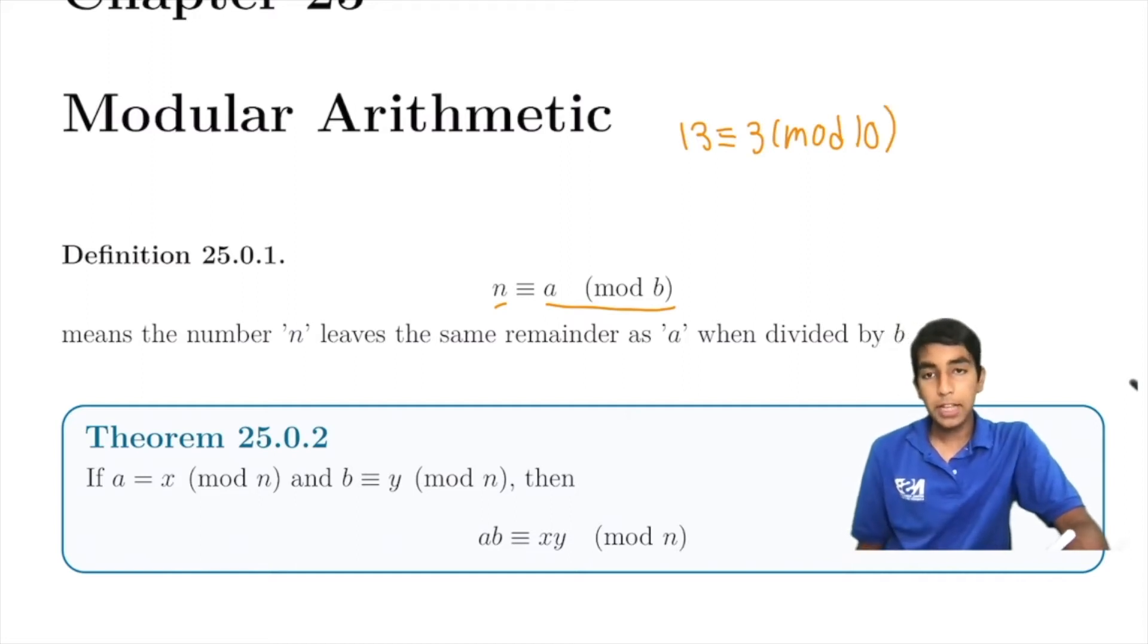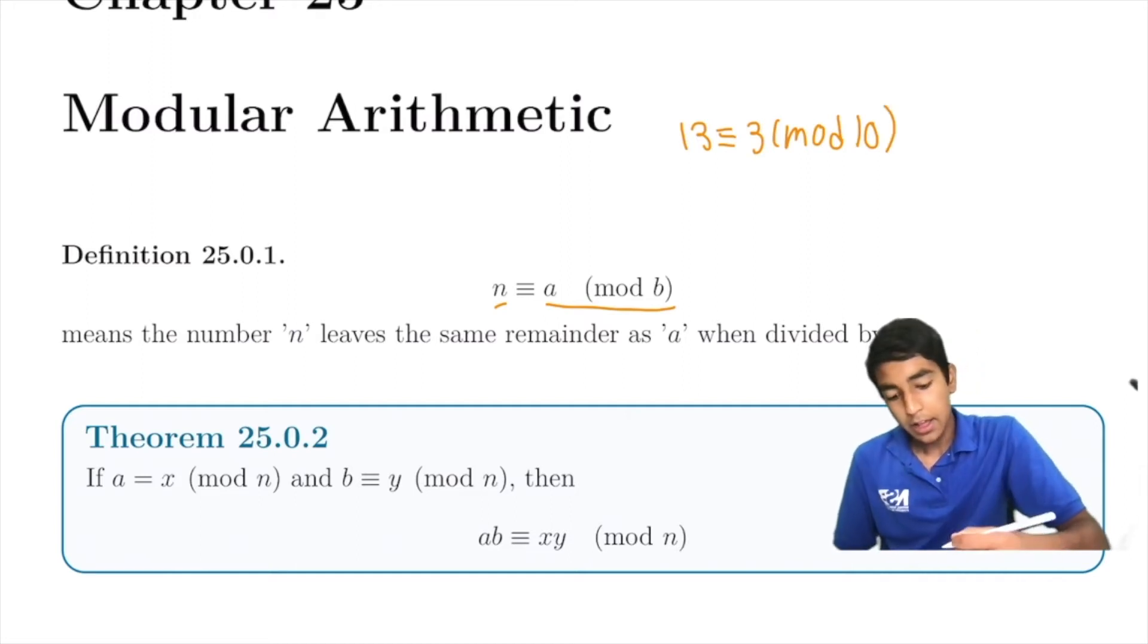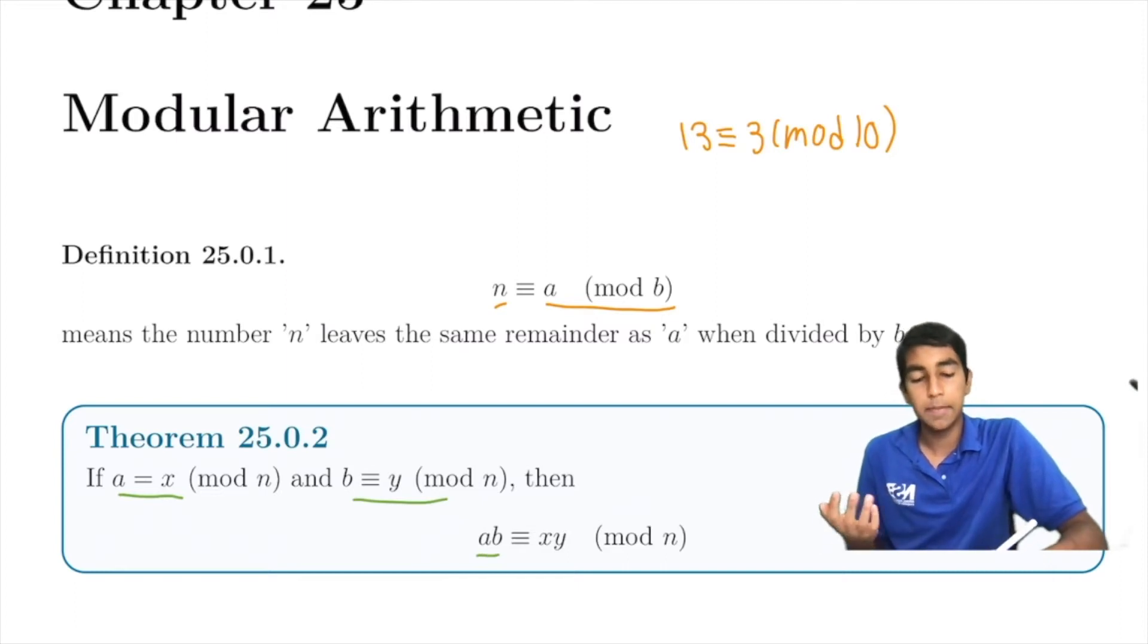An important property of modular arithmetic is that if a is x mod n and b is y mod n as well, then the product ab mod n is just the same thing as xy mod n.